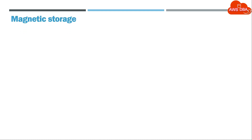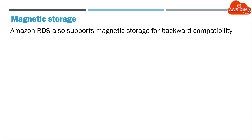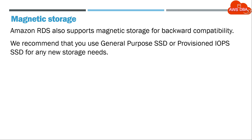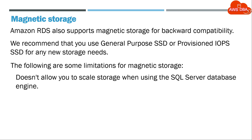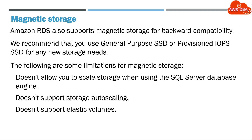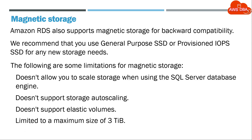Magnetic storage: Amazon RDS also supports magnetic storage for backward compatibility. We recommend that you use general-purpose SSD or provisioned IOPS SSD for any new storage needs. The following are some limitations for magnetic storage: it doesn't allow you to scale storage when using the SQL Server database engine, doesn't support storage auto-scaling, doesn't support elastic volumes, is limited to a maximum size of 3 TB, and limited to a maximum of 1,000 IOPS.